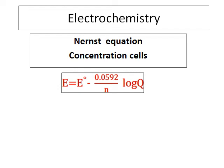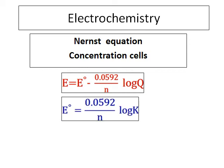The Nernst equation addresses situations where cells are not in standard conditions — that is, not at 1 atmosphere and 25 degrees Celsius. When not in standard conditions, we use the Nernst equation: E equals E0 minus 0.0592 divided by N, times log Q. E is the cell potential under non-standard conditions, E0 is the standard cell potential, N is the number of electrons transferred, and Q is the reaction quotient (products over reactants).